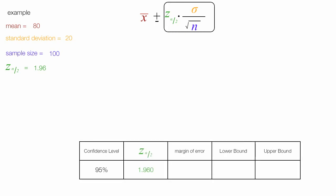So the first thing I'm going to do is calculate the margin of error. So the margin of error is equal to 1.96 times 20 divided by the square root of the sample size, which is 100. 1.96 is the confidence coefficient, 20 is the standard deviation, and 100 is the sample size.